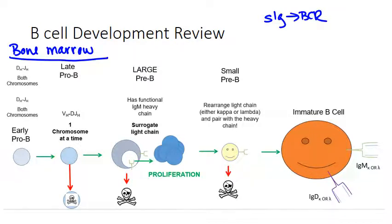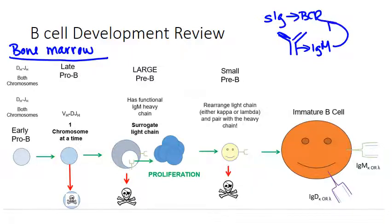Pre-B cells will have already rearranged their heavy chain. If you remember the structure of your antibody, this is your heavy chain and this is your light chain. The heavy chain that is always first made is an IgM heavy chain, which then serves as the initial B-cell receptor. When it's a large pre-B cell, it has created the heavy chain protein, which is expressed inside an endosome before it is paired with the pre-B surrogate receptor to test if that heavy chain is functional.